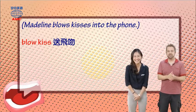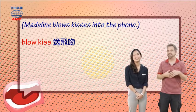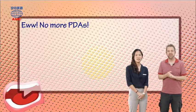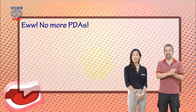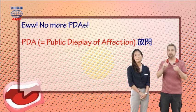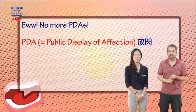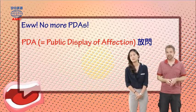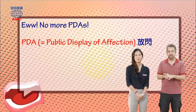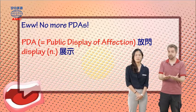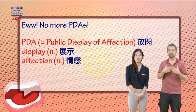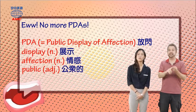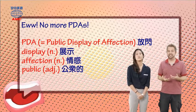After Madeline does all of this, blowing kisses, saying honey, Cynthia says, eww, no more PDAs. OK, here, PDA. It's a public display of affection, which is when you and your partner kiss or cuddle and all that sort of stuff in public. So, a display is when you show something. Affection means love and really caring for people. And it's in public,